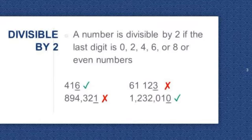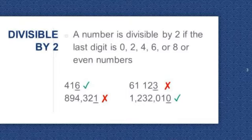Divisible by 2. A number is divisible by 2 if the last digit is 0, 2, 4, 6, or 8 — these are what we call even numbers. Let's write a few examples. 416: the last digit is 6. 6 is an even number, so therefore 416 is divisible by 2.